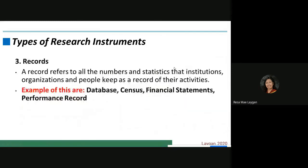Lastly, we have records. A record refers to all the numbers and statistics that institutions, organizations, and people keep as a record of their activities. Examples include databases, census data, financial statements, and performance records. Records are applicable for the secondary data method — you get the records from internal or external sources. These are the basic types of research instruments under non-experimental research.